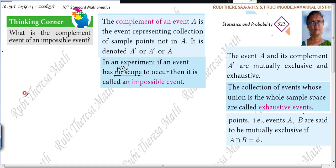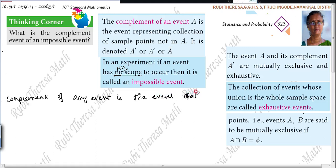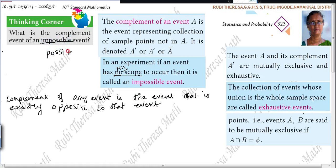The complement of any event is the event that is exactly opposite to that event. So if impossible means no scope, what is the opposite? A possible event — full scope. And full scope means what? Sure event.